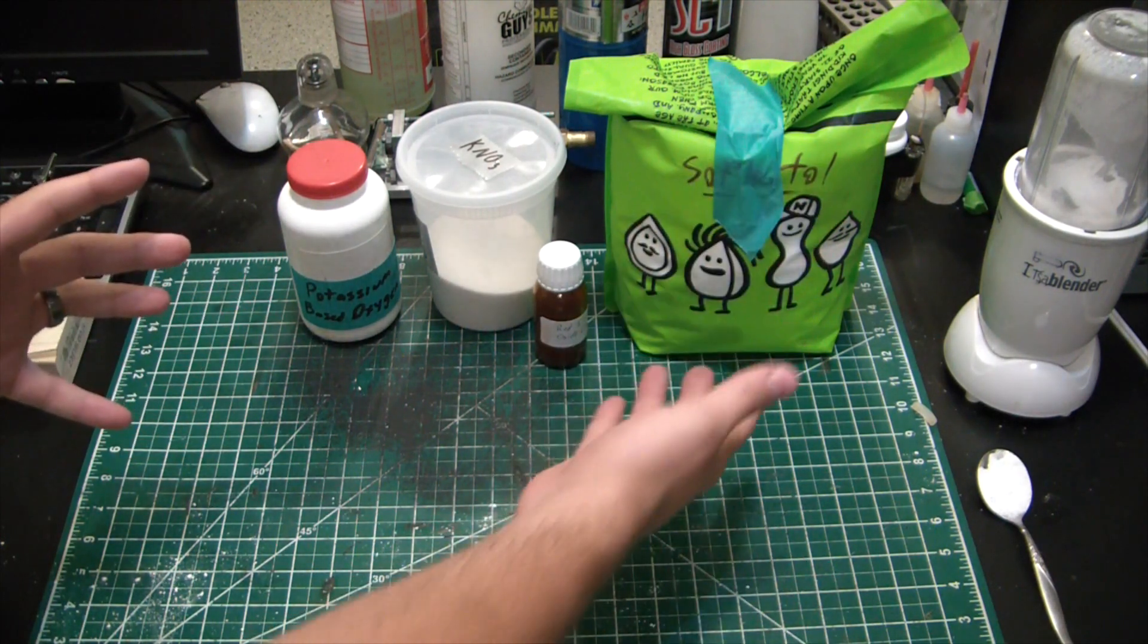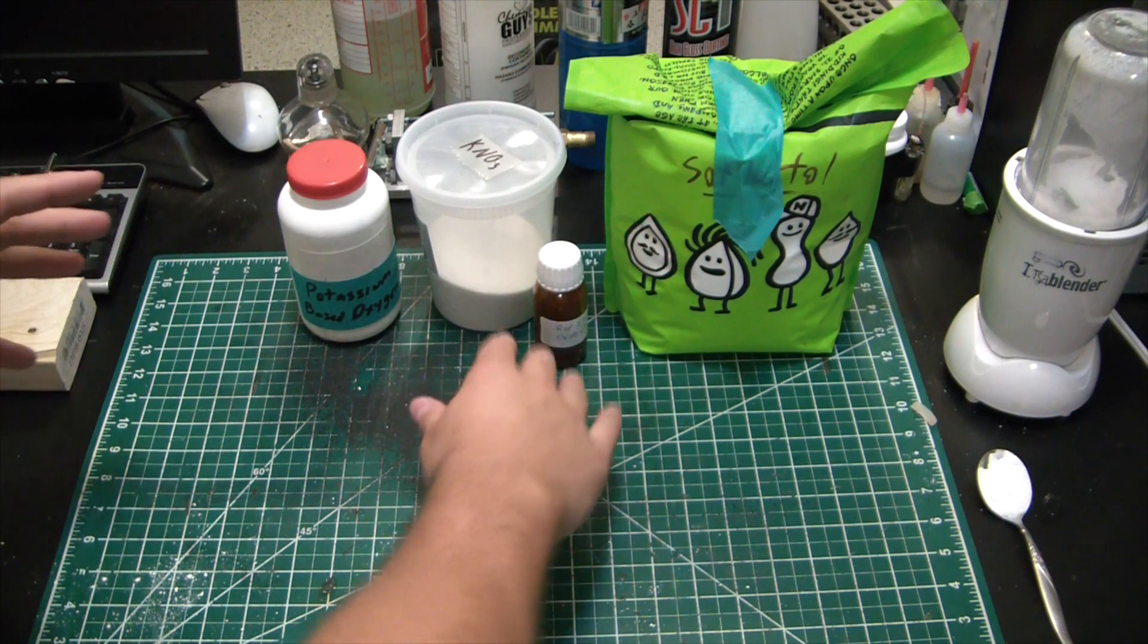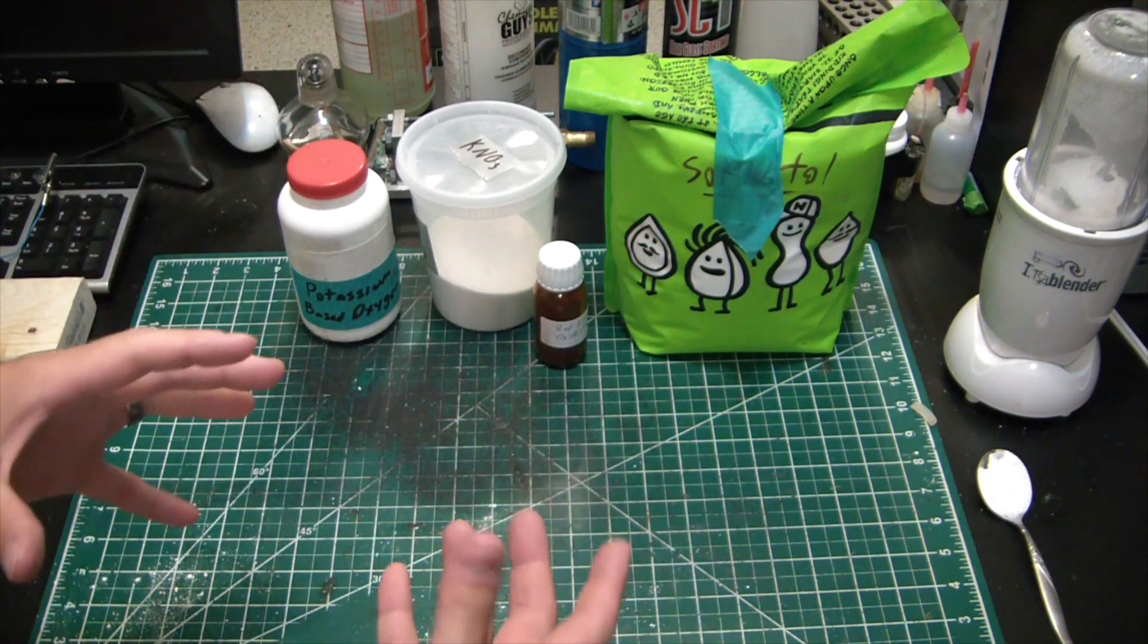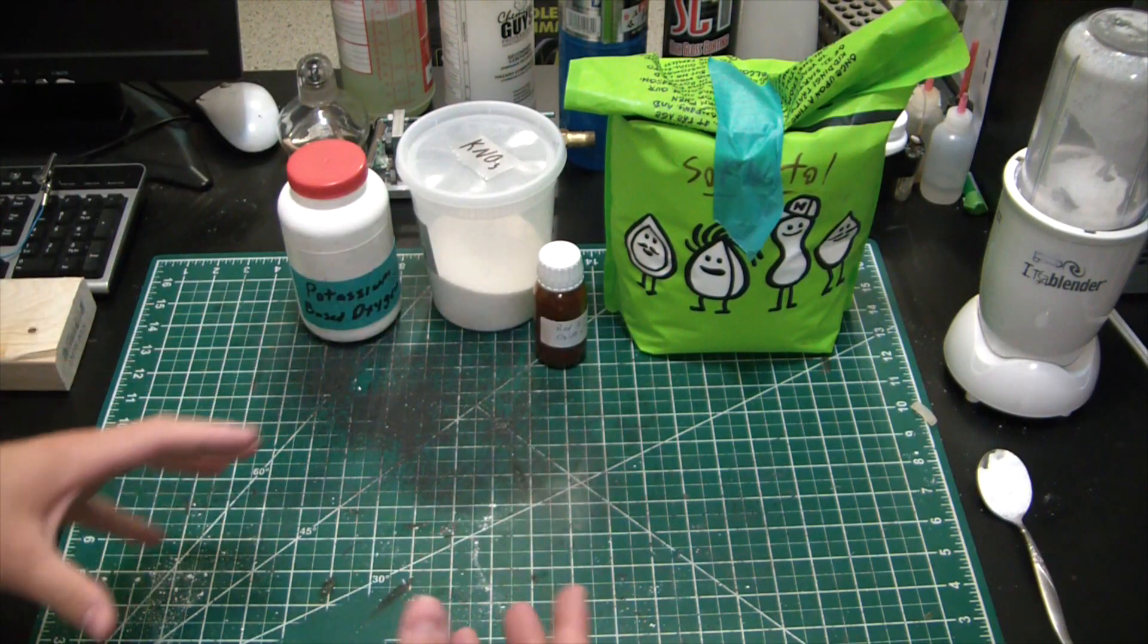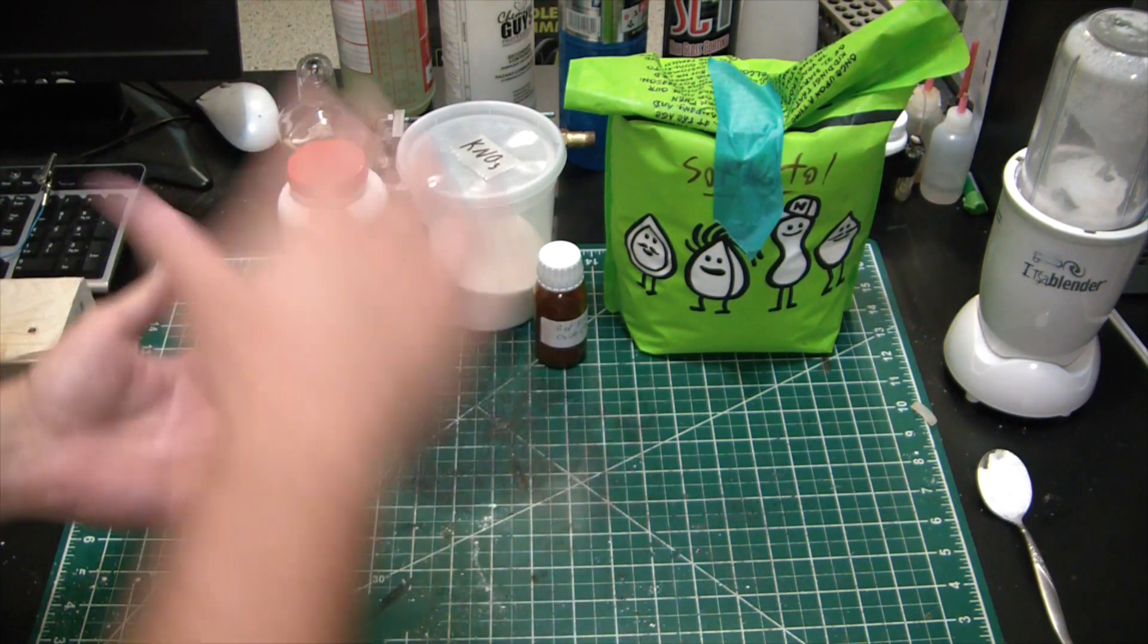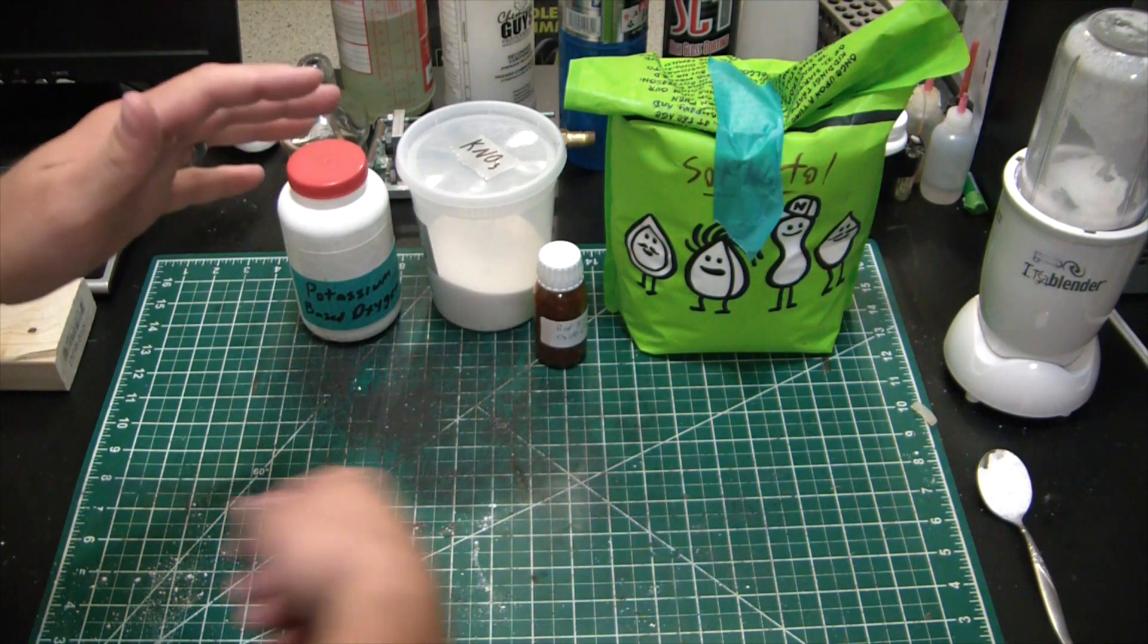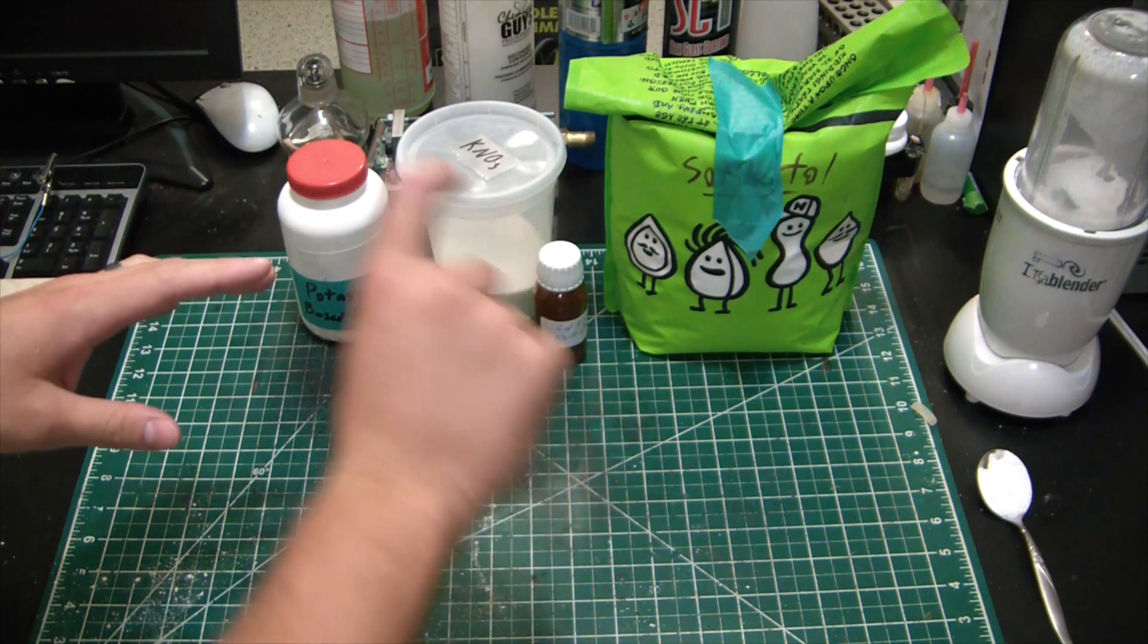We create a homogeneous suspension of the potassium based oxidizer and red iron oxide in the sorbitol. When that sets after we take it off the skillet or griddle and cast grains, you have a set suspension.